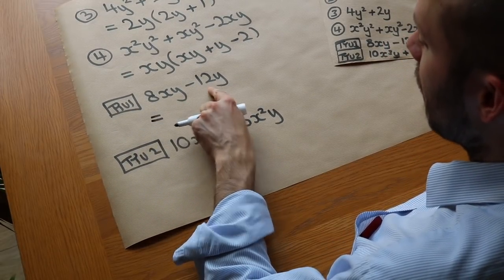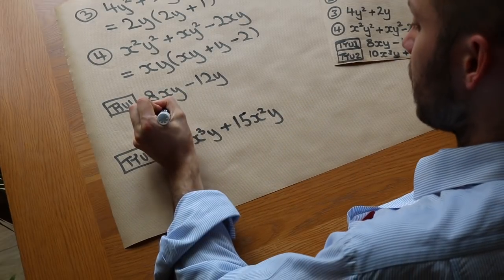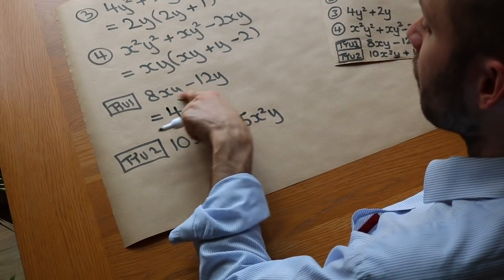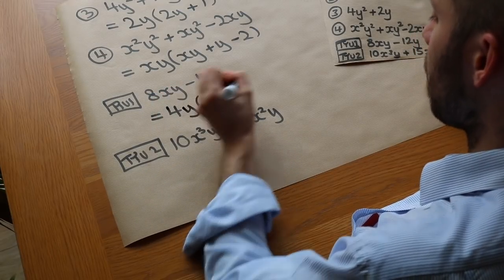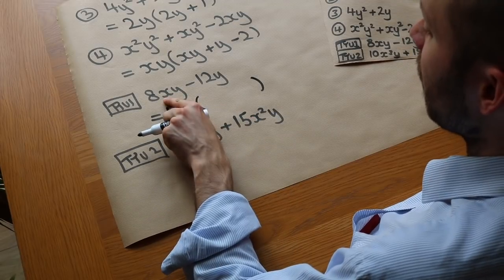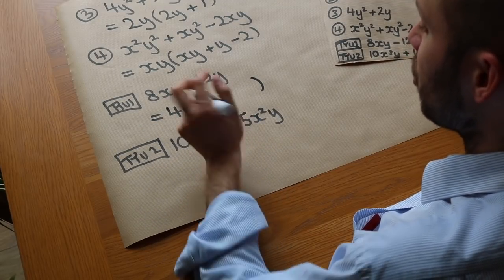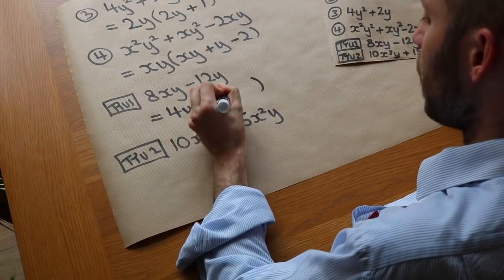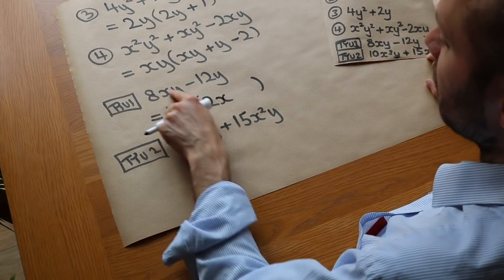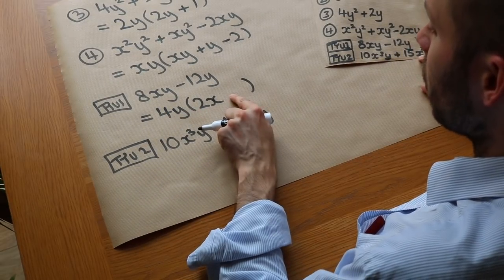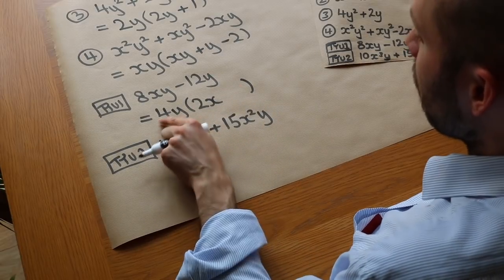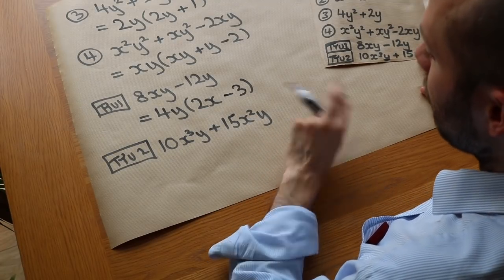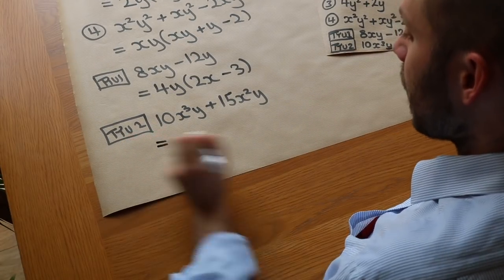For 8XY−12Y: first, the highest common factor of 8 and 12 is 4. Looking at variables, they don't both have an X, but they do both have a Y. So we factorize out 4Y. Then 4Y times what gives 8XY? We need 2 and X, so 2X. And 4Y times what gives −12Y? 4 times −3 gives −12, so it's −3. The complete factorization is 4Y(2X−3).